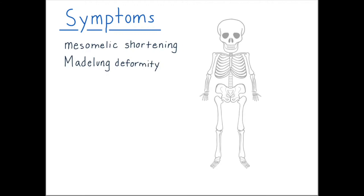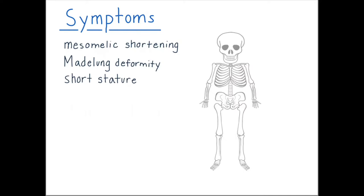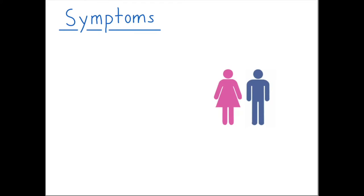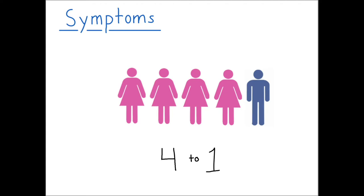The final major feature of LWD is short stature, which is much milder than many other skeletal dysplasias. Occasional features include high-arched palate, scoliosis, and hypertrophy or overgrowth of the calf muscles. LWD can affect females or males but affects more females than males by a ratio of 4 to 1. Females also tend to have more severe symptoms.